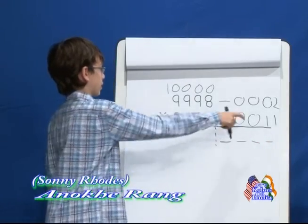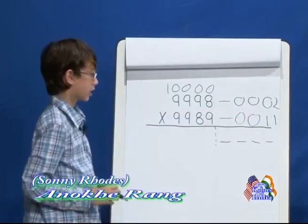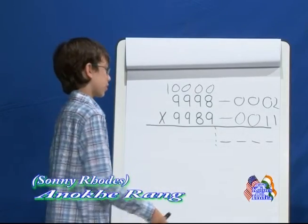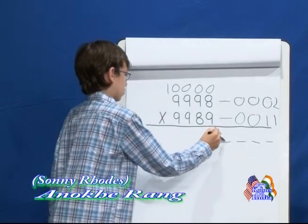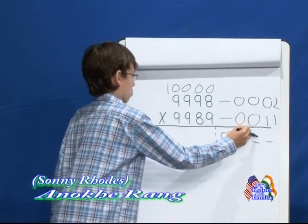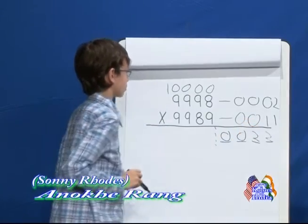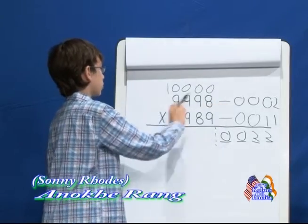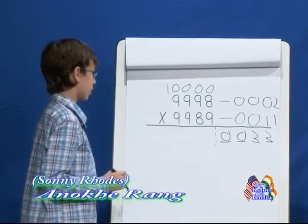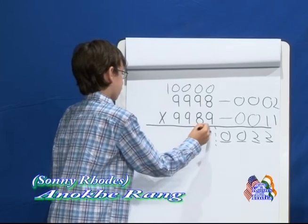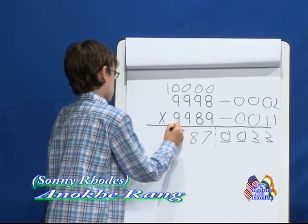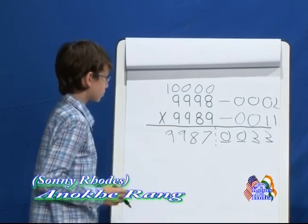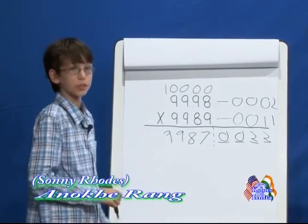The next step is to multiply these two numbers together and put them on the right side. But for there to be four digits, you have to put two zeros in front of it. The next step is cross-subtraction: 9,998 minus 11, or 9,989 minus 2 — either way, you would get the same result. So, the answer is 9,987,0022.